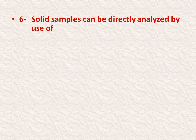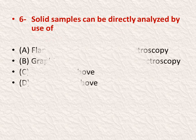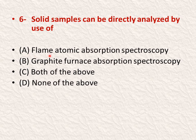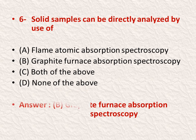Question number six: solid samples can be directly analyzed by the use of — options: A is flame atomic absorption spectroscopy, B is graphite furnace absorption spectroscopy, C is both of the above, D is none of the above. The right answer is B — solid samples can be analyzed by the use of graphite furnace absorption spectroscopy.